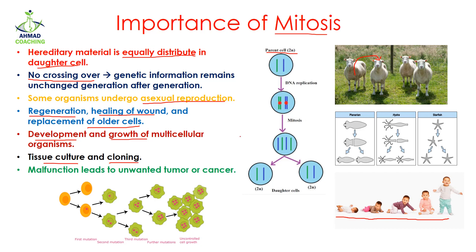Mitosis is also involved in tissue culturing and cloning processes. As mentioned, Dolly the sheep was produced by the process of cloning, which relies on mitosis. Any malfunction in mitosis can lead to unwanted tumor or cancer cells.